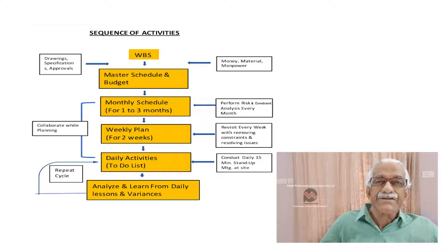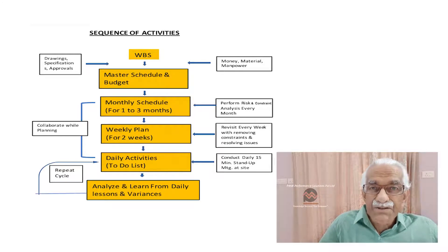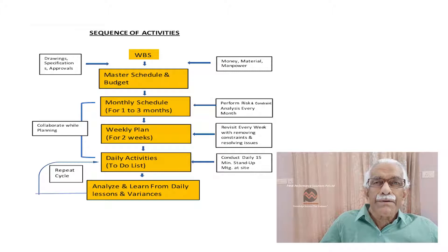Fourth step. Break that master plan schedule or the milestone schedule into a monthly plan. Each month having four weeks. Make it for one to three months. Now, the activities in that monthly plan will be accordingly of that magnitude, which can be completed in a month or maybe overlap into the next month.